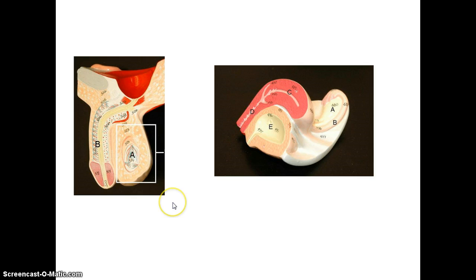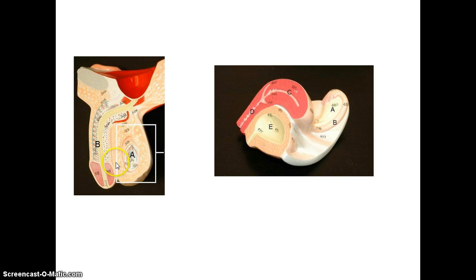Now looking at the reproductive organs — looking at the male — this is the scrotum, within the scrotum are the testes, and then this is the penis. The scrotum is the sac, in the sac are the testes, and then the penis.